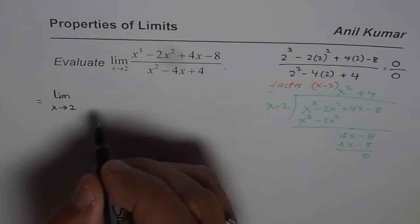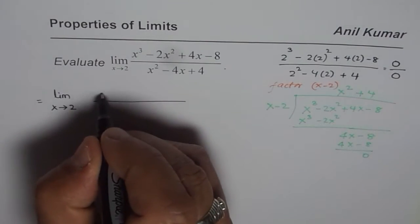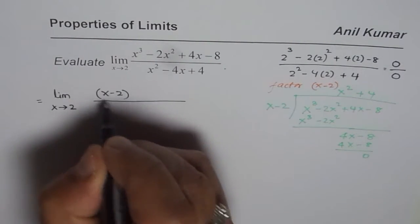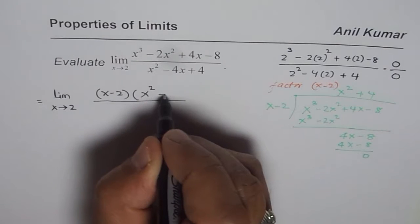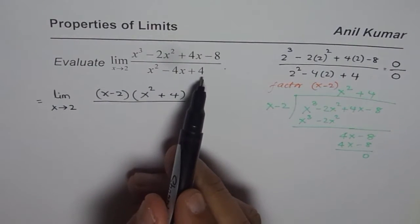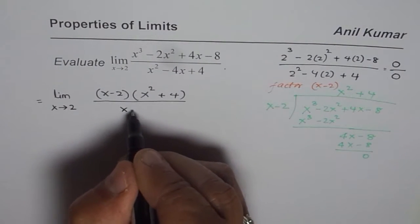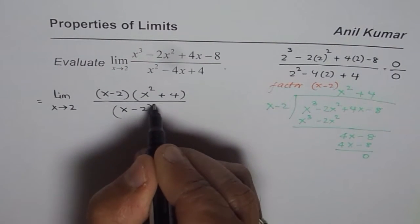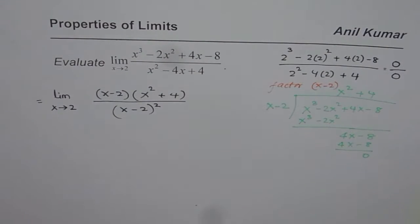So we can write the numerator as (x minus 2) times (x squared plus 4). As far as the denominator is concerned, it is a perfect square — it is (x minus 2) whole squared. So x minus 2 is the factor in the denominator, as expected.